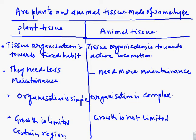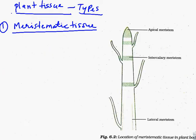Plant and animal tissues have different types of tissue. Now we will look at plant tissue. Plant tissue is mainly divided into two types: one is Meristematic tissue, and another is Permanent tissue.